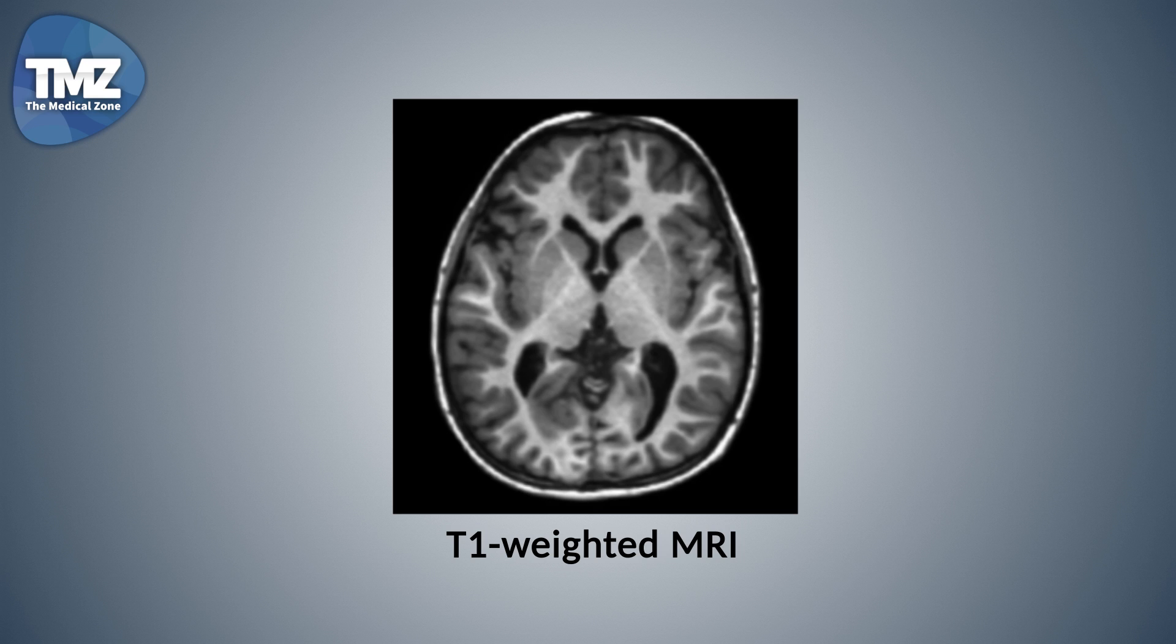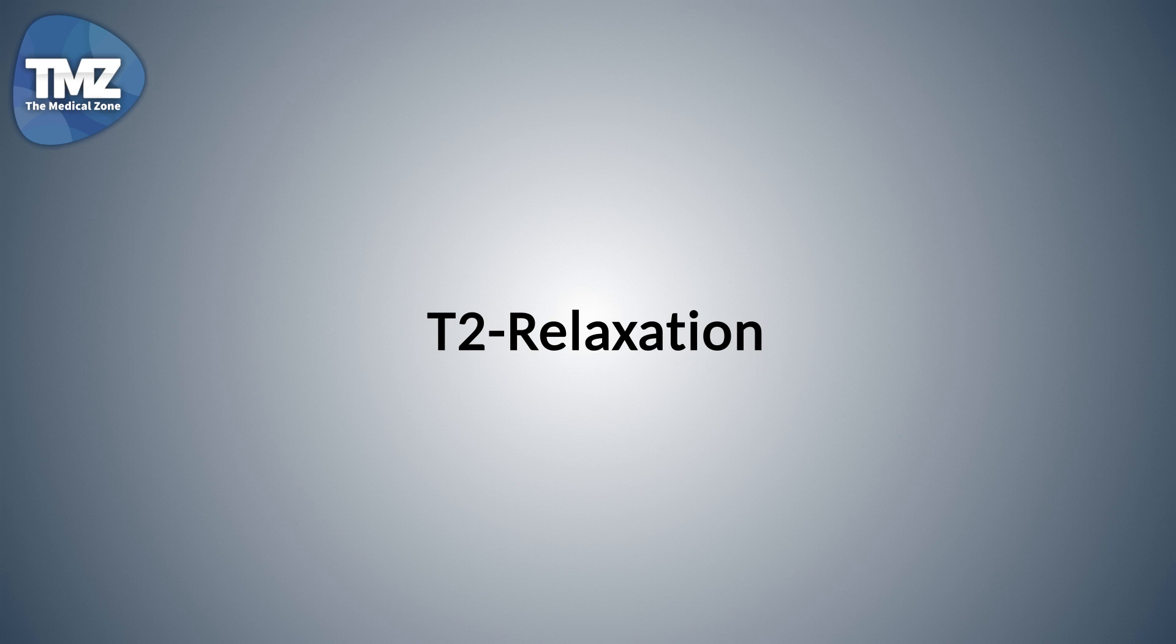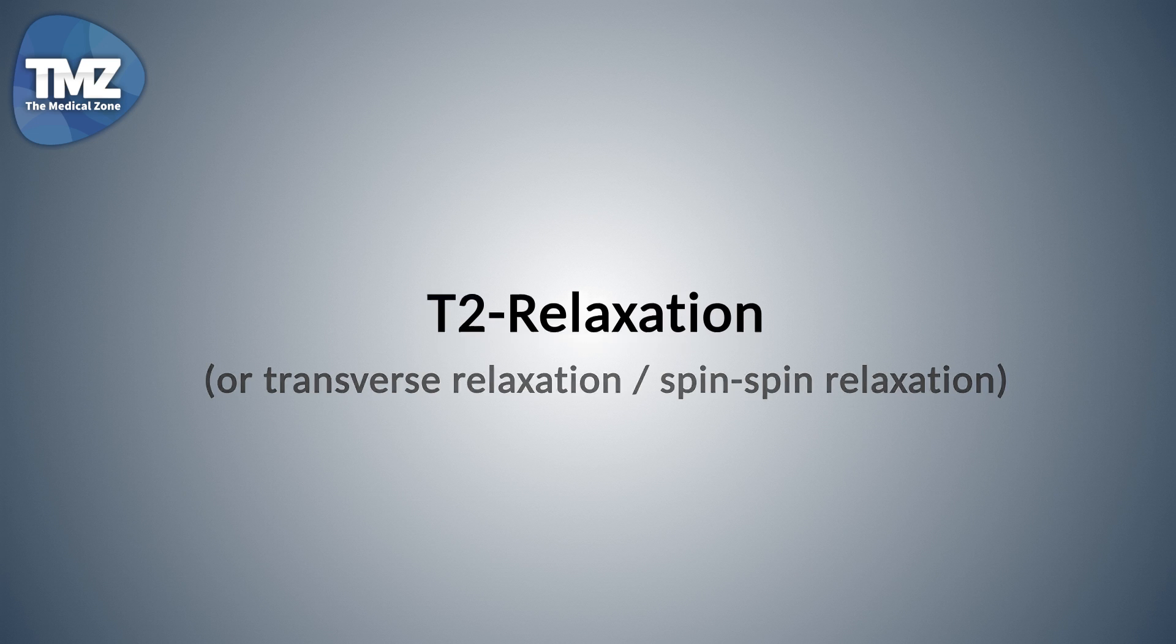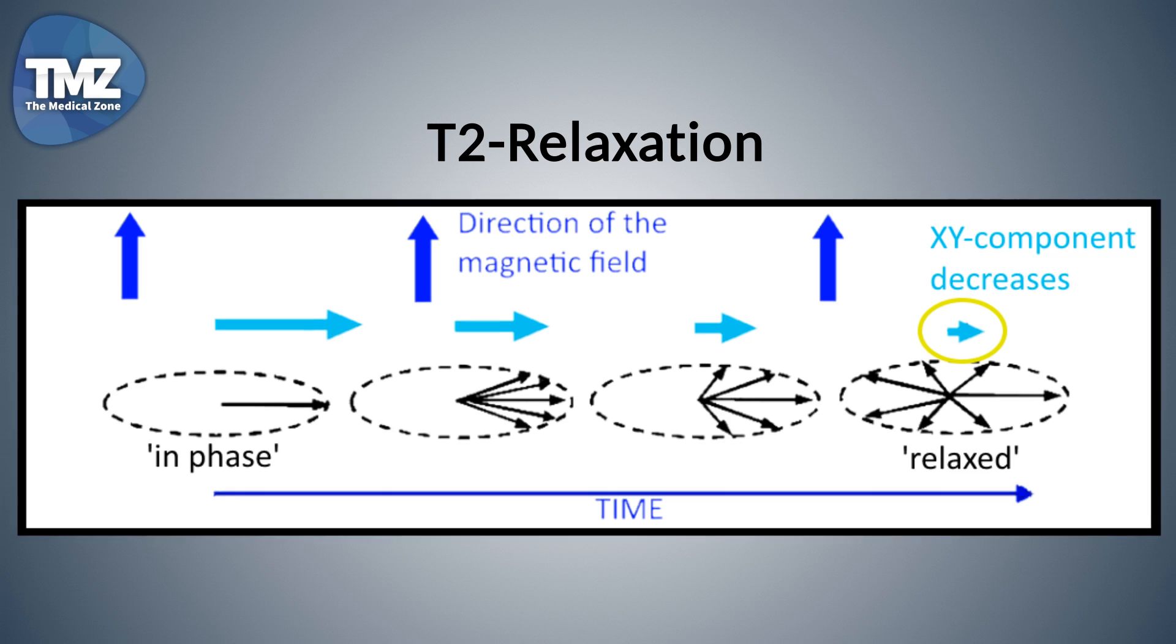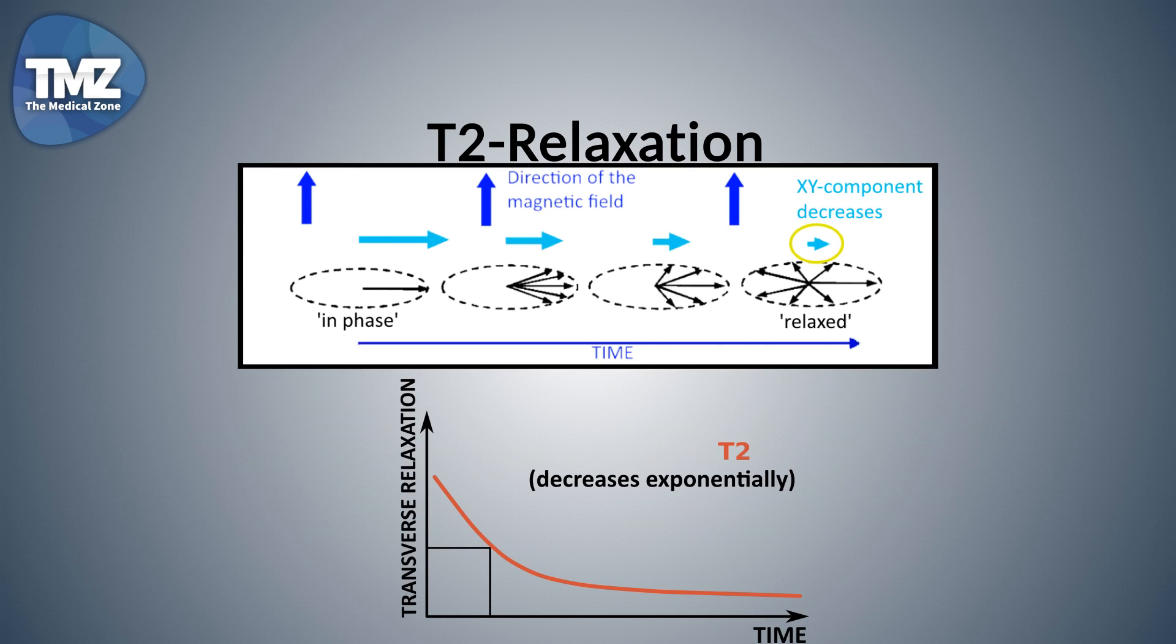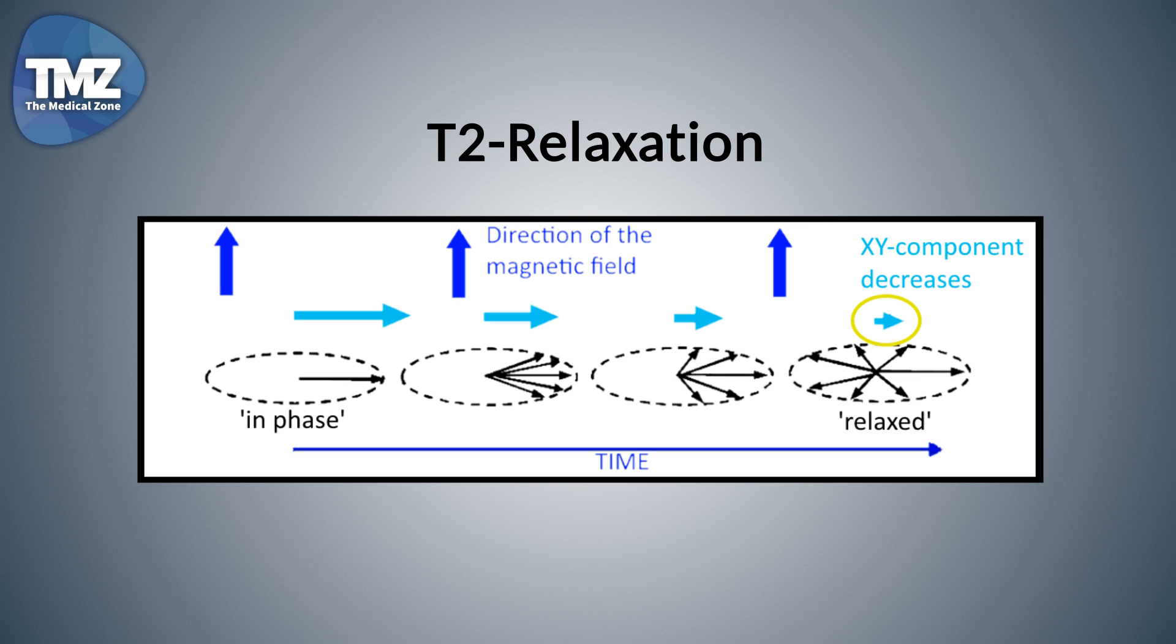Also there's something called T2 relaxation. This is transverse relaxation or also spin spin relaxation. Immediately after the RF pulse, so the radio frequency pulse, all the spinning protons are exactly in phase. Almost immediately they lose coherence, as some spin slightly faster than the others, so the result is that the XY component of the magnetic vector decreases exponentially.